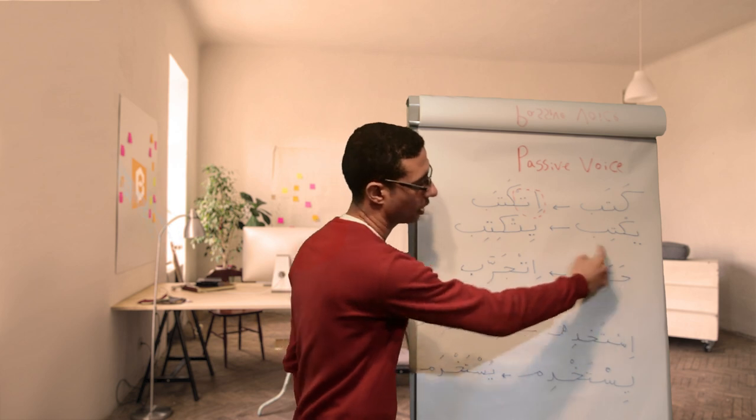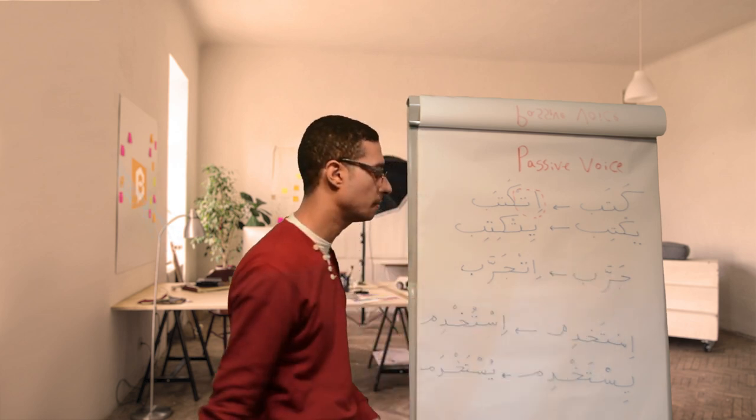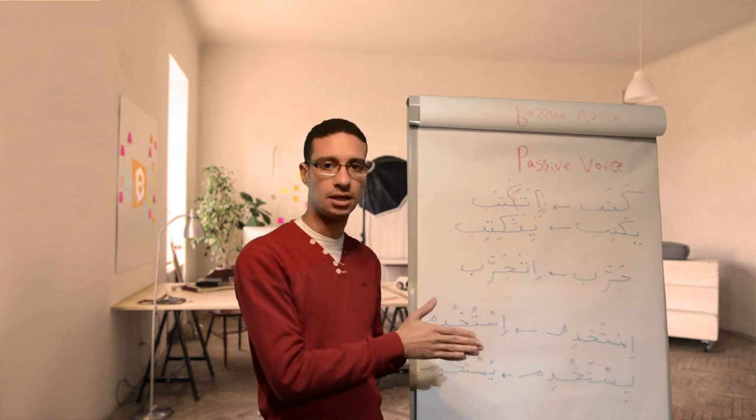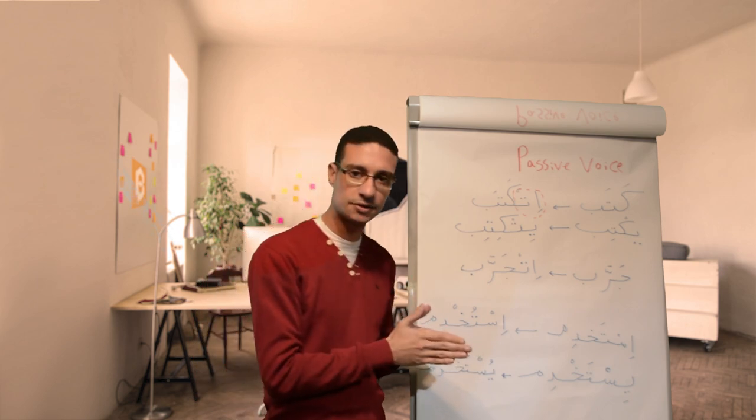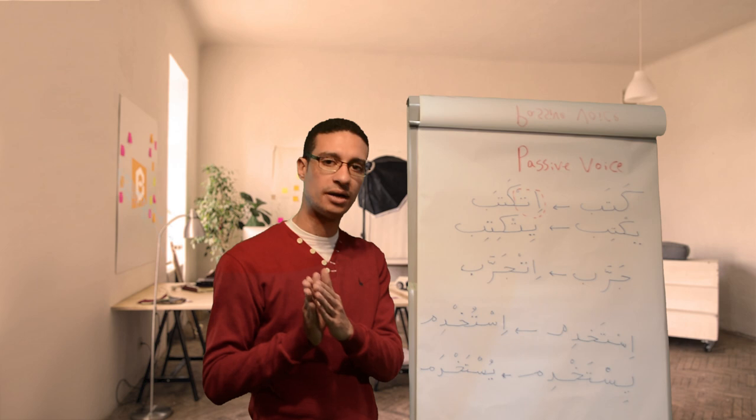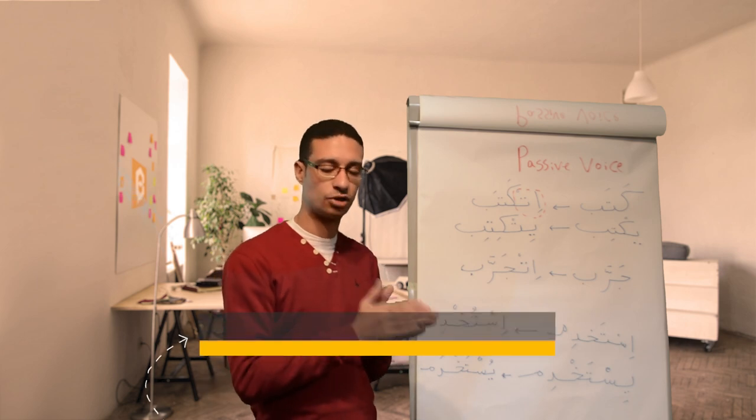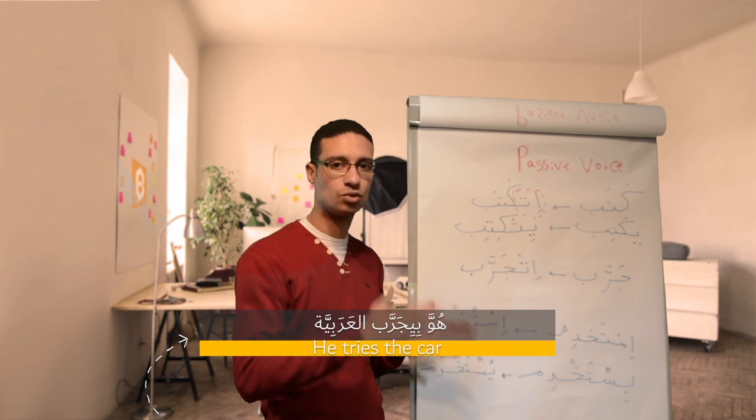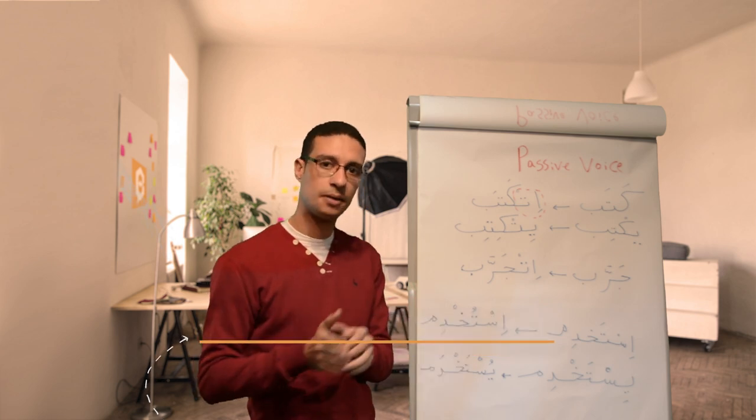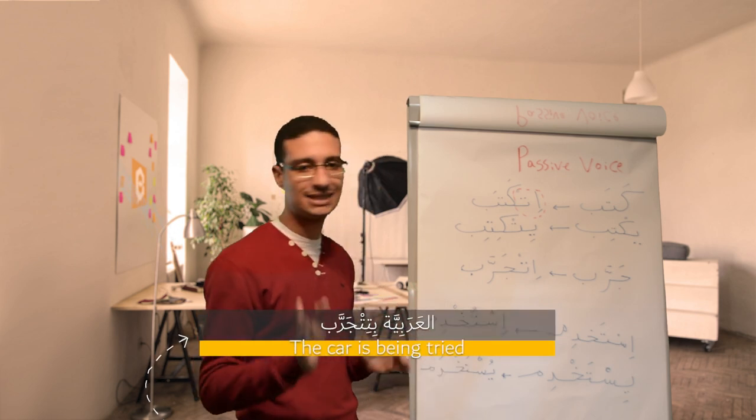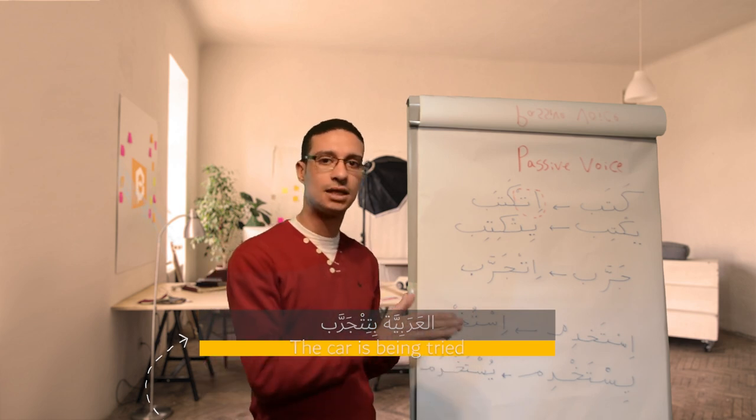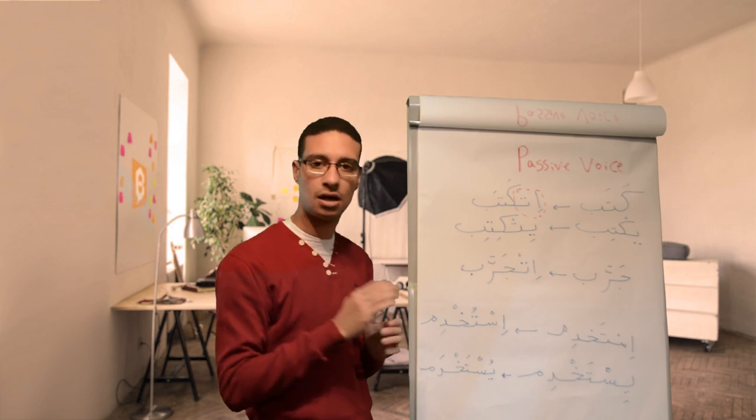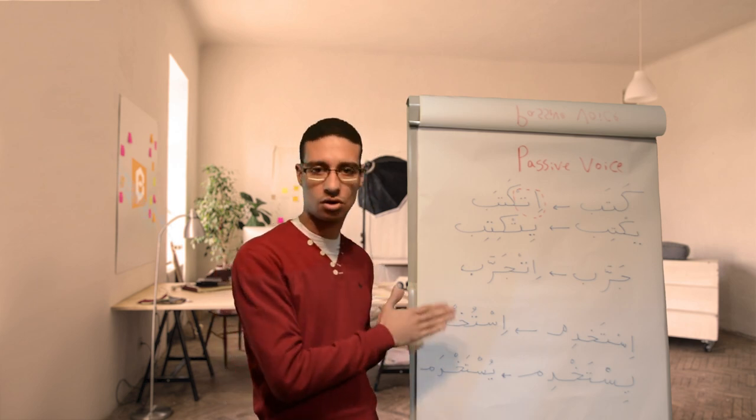For a four-letter verb, like a four-letter verb like this, garrab. The present tense is yi-garrab. He tries out. He experiments. Huwa bi-yi-garrab. For example, huwa bi-yi-garrab al-arabiya. It will be al-arabiya bi-tit-garrab. So bi-tit-garrab. So with ta because it's feminine. Al-arabiya bi-tit-garrab.